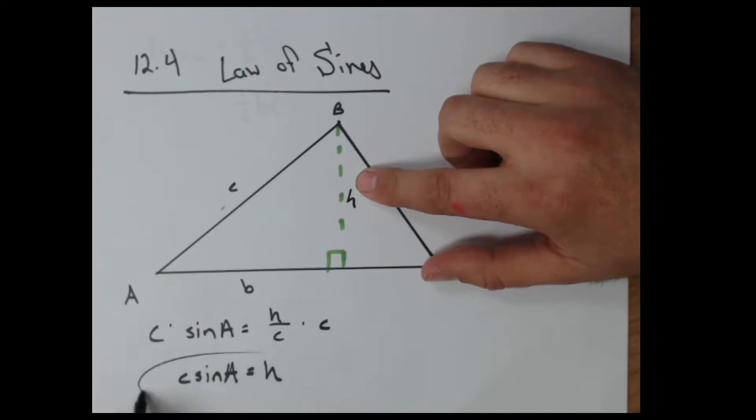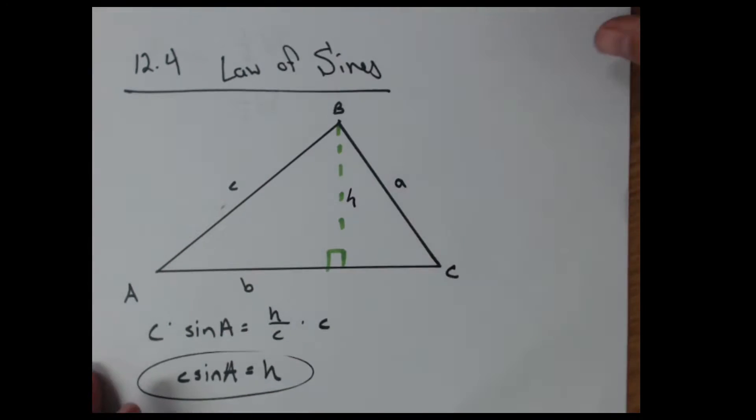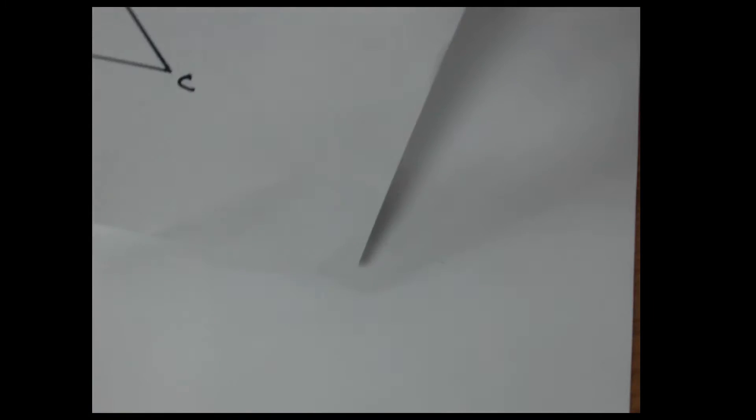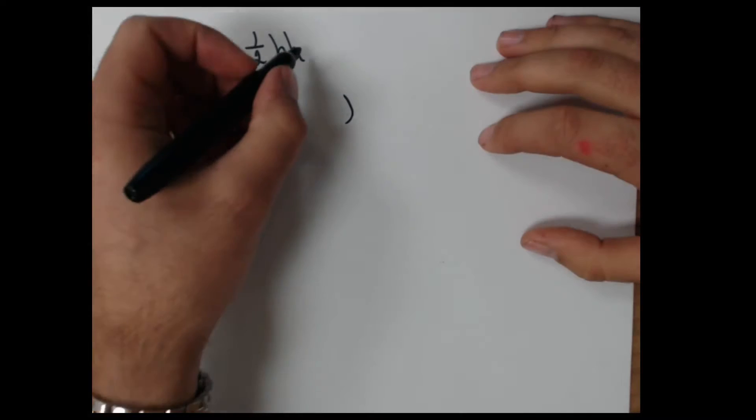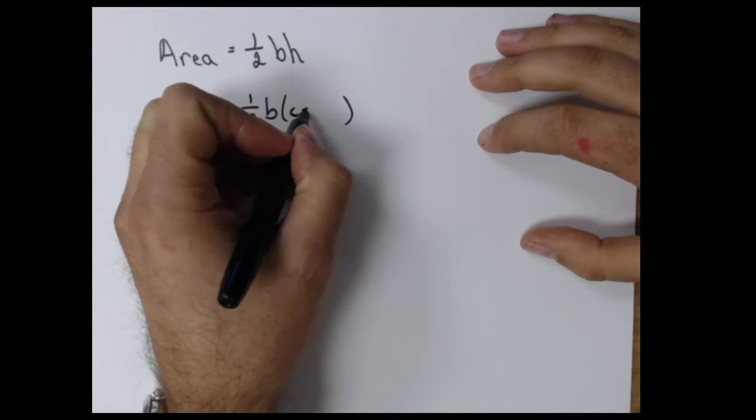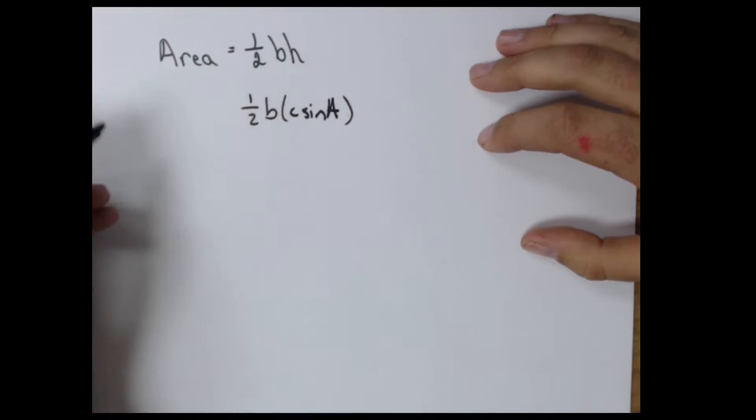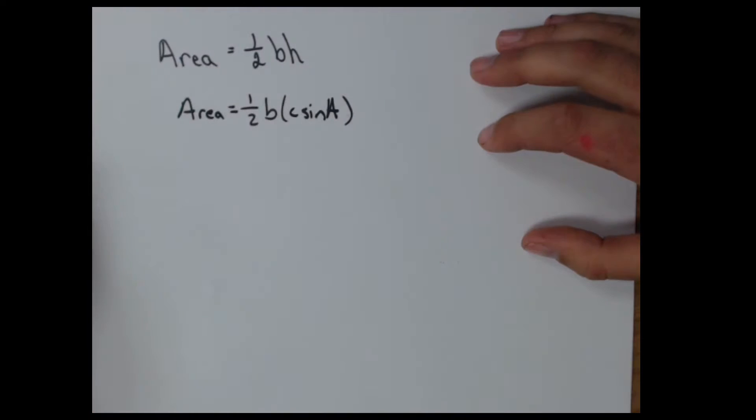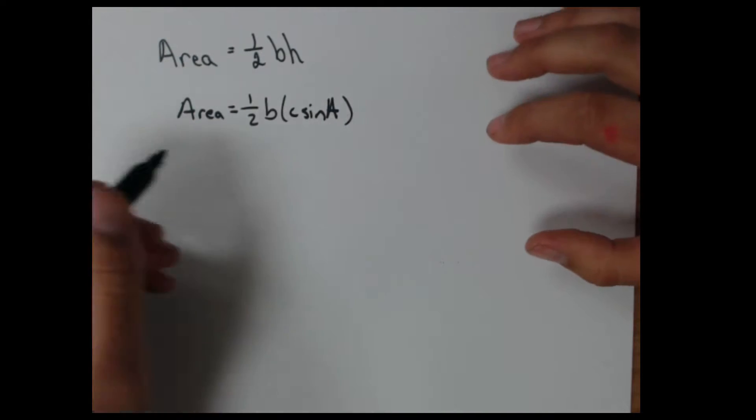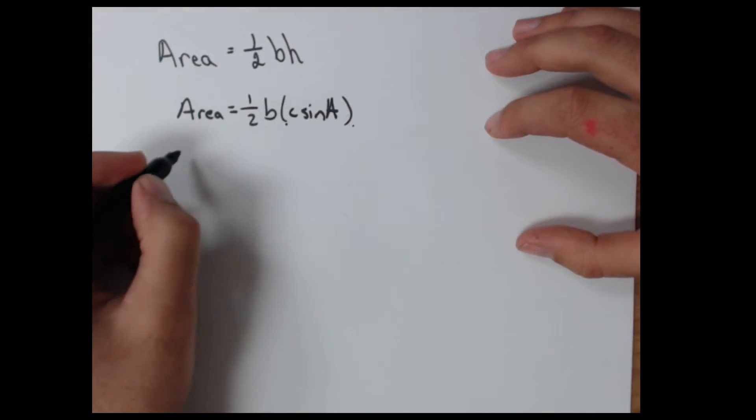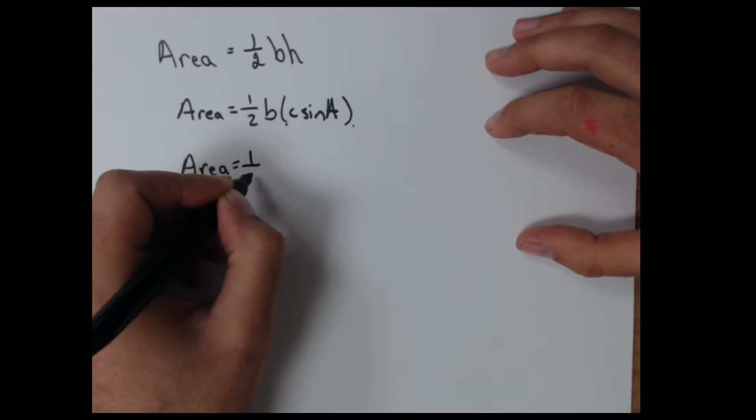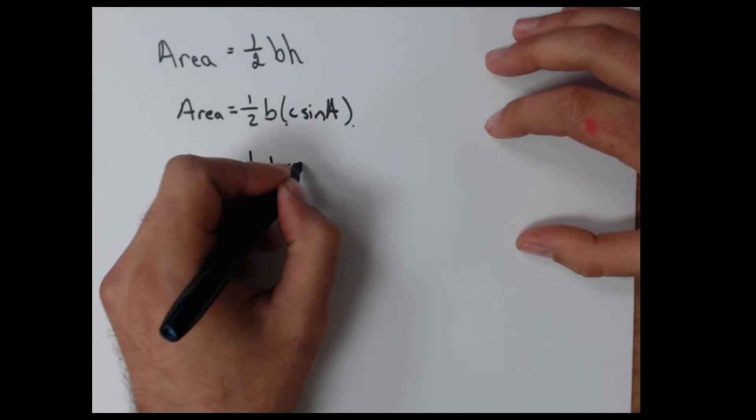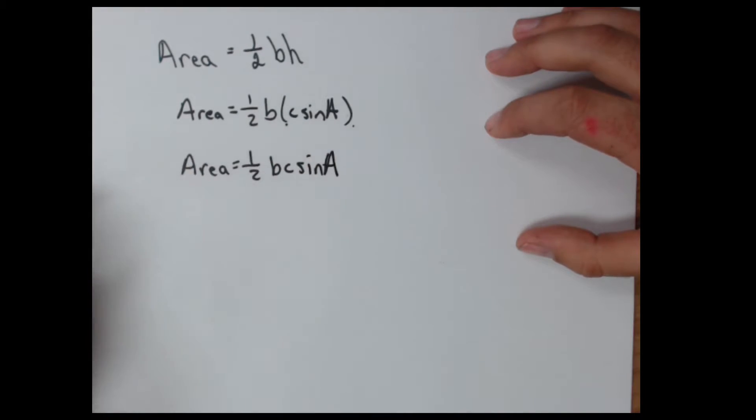And I'm going to substitute that in. So instead of H, this is C sine of A. That's how I find the area of my triangle. That's the nice thing now, is I don't need these parentheses exactly where they are. I can shuffle them around a little bit. So that's the same as one half B, C sine A.